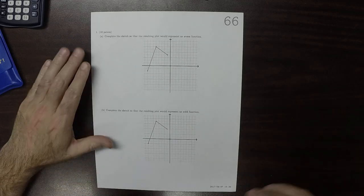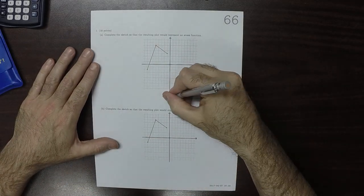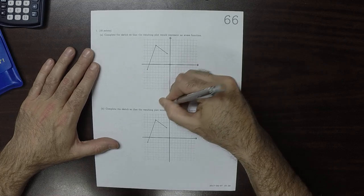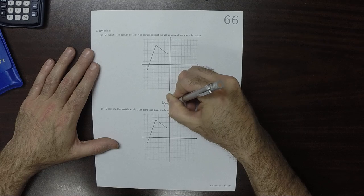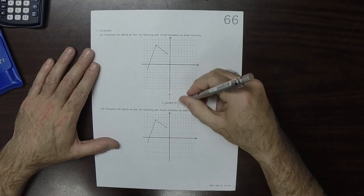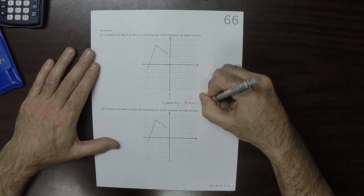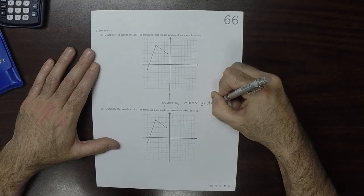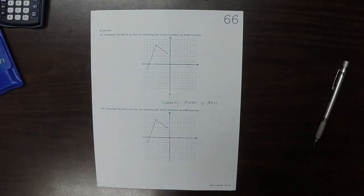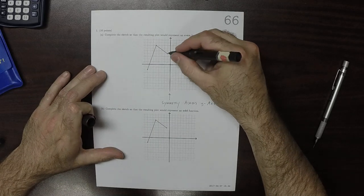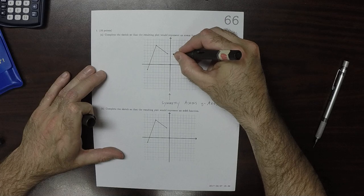So we want a mirror symmetry, symmetry across the y-axis. So for every point, we want the symmetric point. So this point reflects to that point.